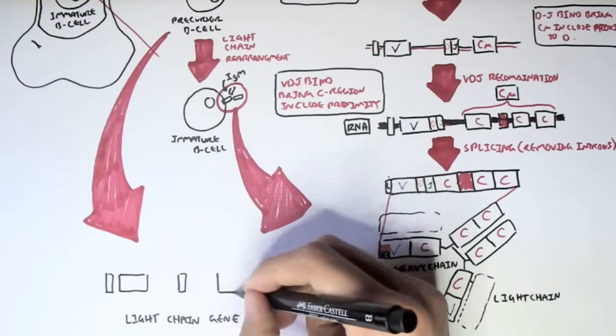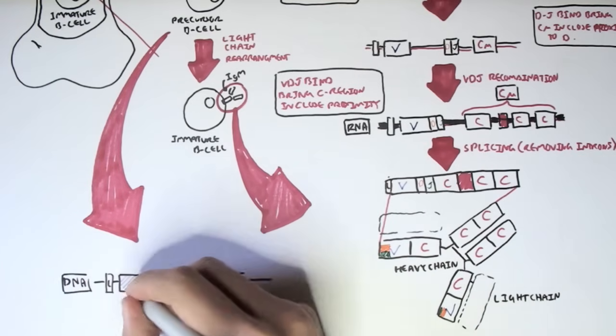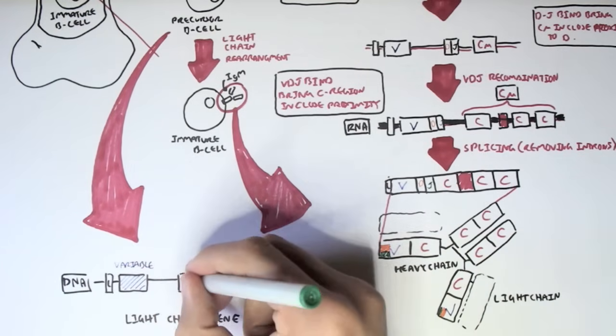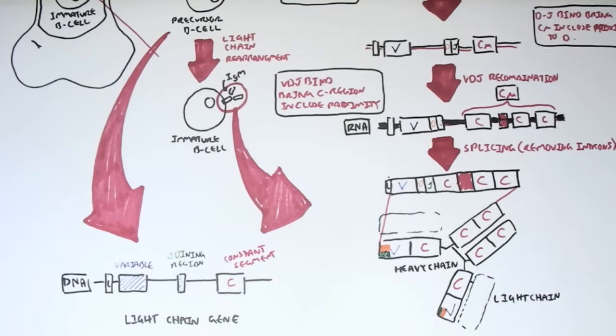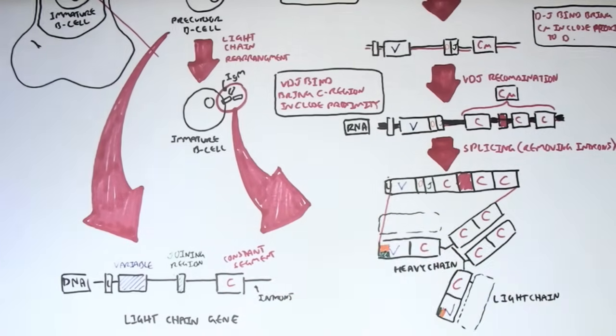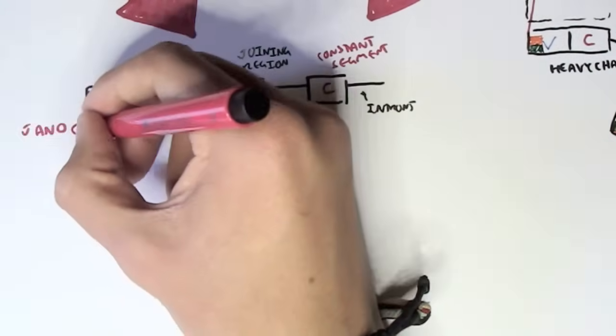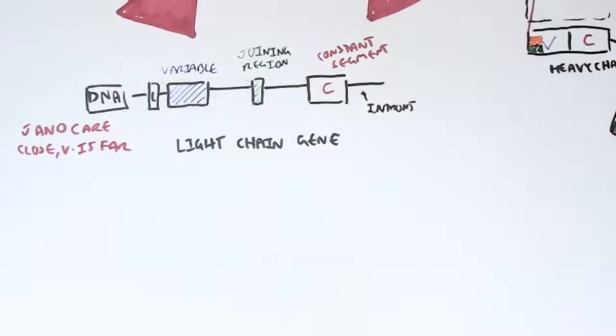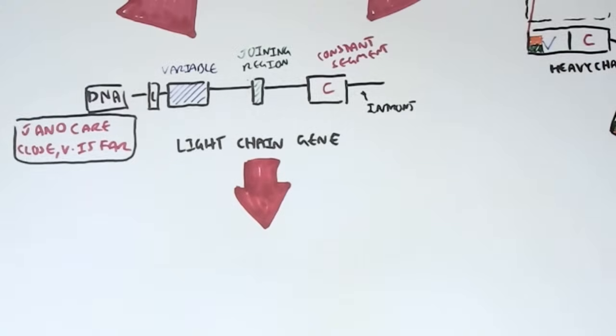Now, the light chain gene is different to the heavy chain gene, in that the light chain gene does not contain a D region. So we still have the variable segment, the joining region segment, and the constant segment. But we don't have the diversity segments. We, of course, have introns in this gene, because it's the DNA. And remember, it's still the same, the joining region and the constant region are in close proximity, but the variable region is far away.